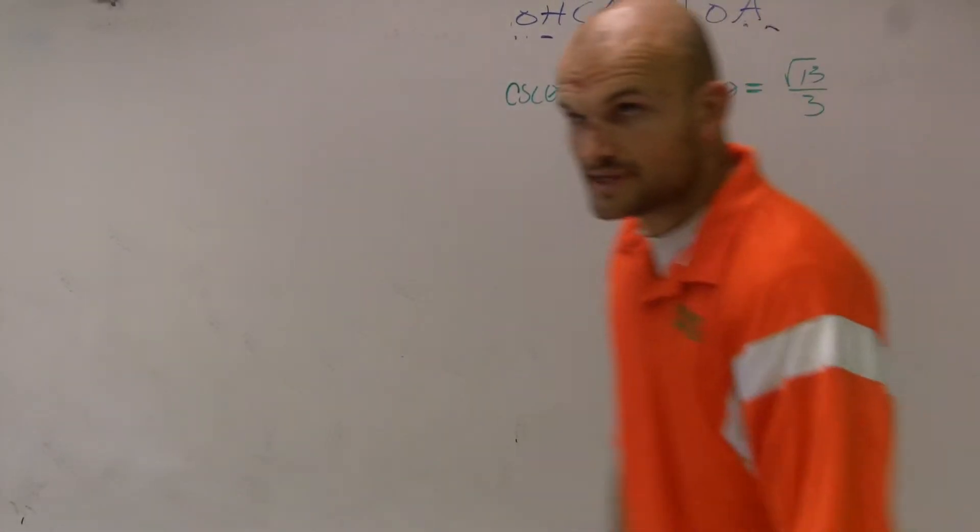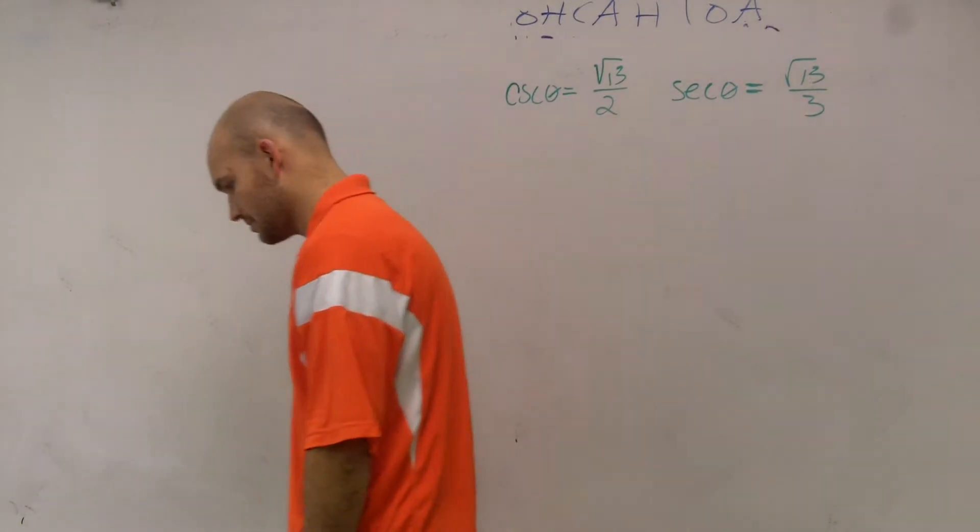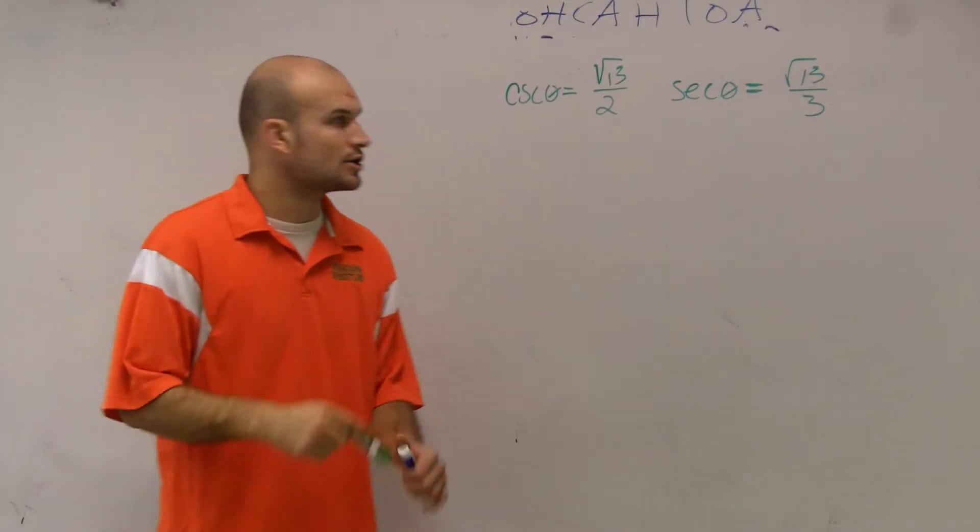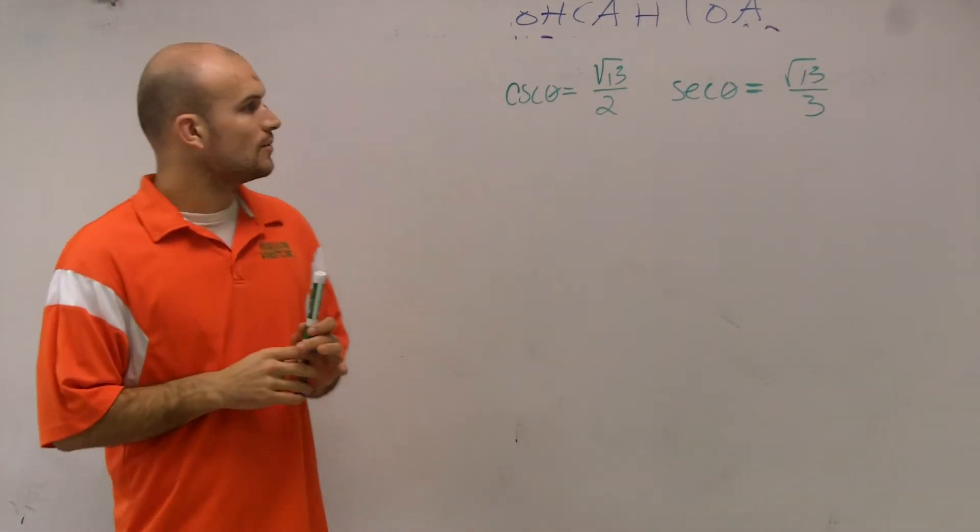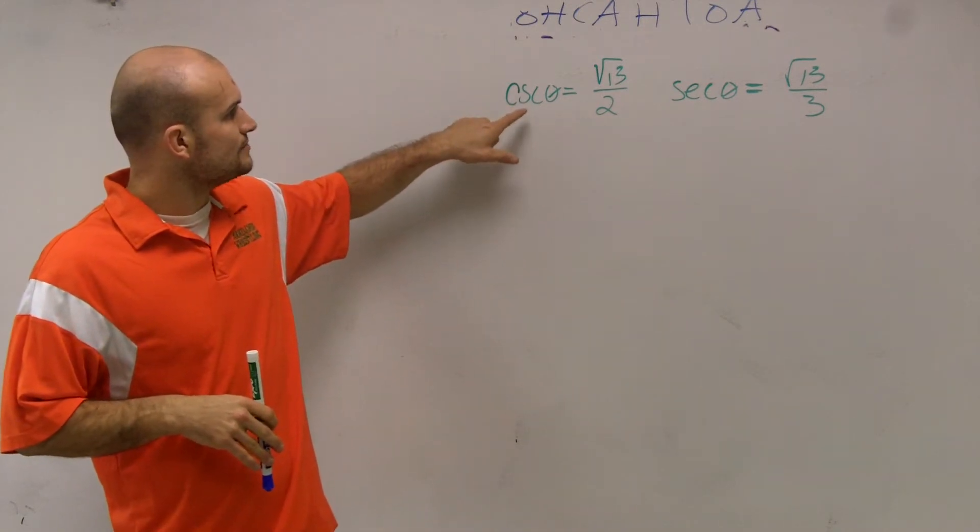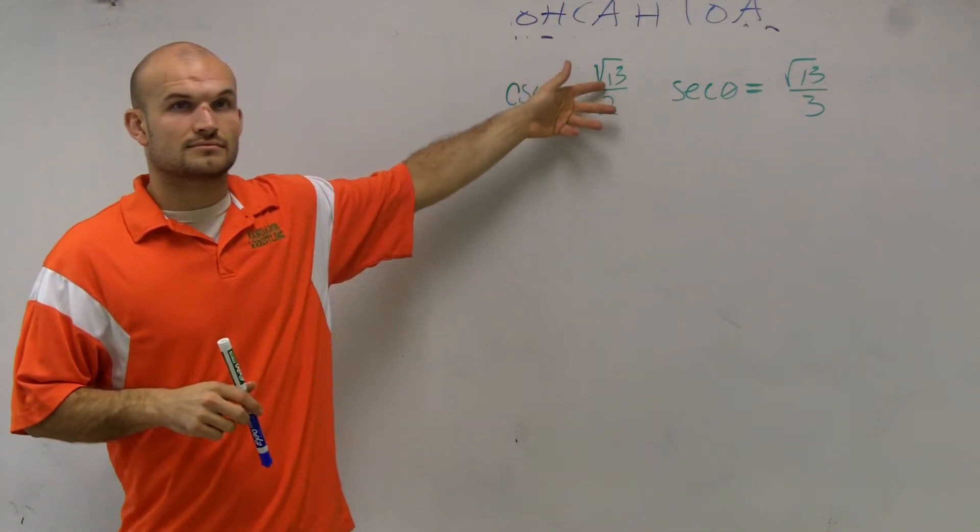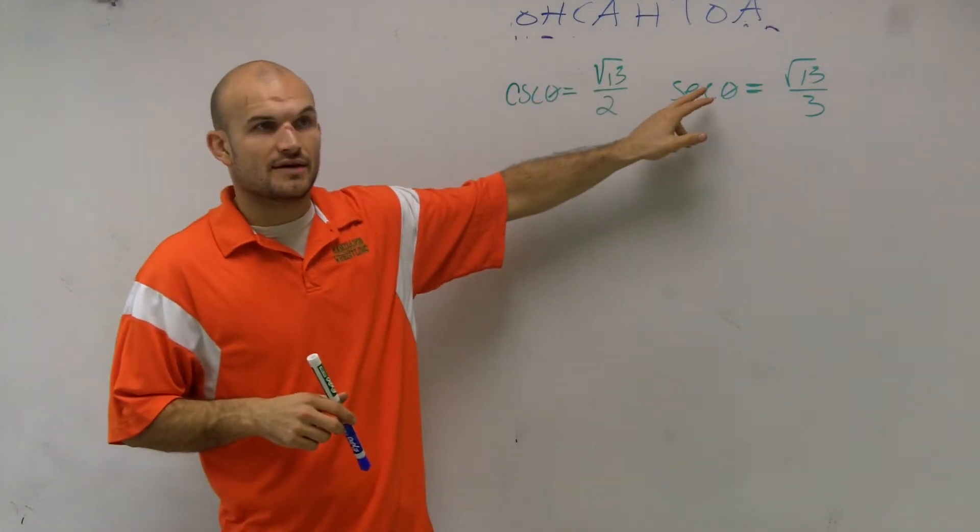After you collect your goals, a couple things I want to go over are co-function identities. They gave us cosecant of theta and secant of theta.